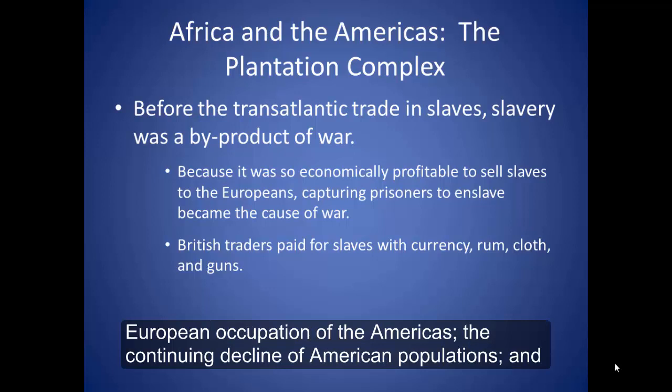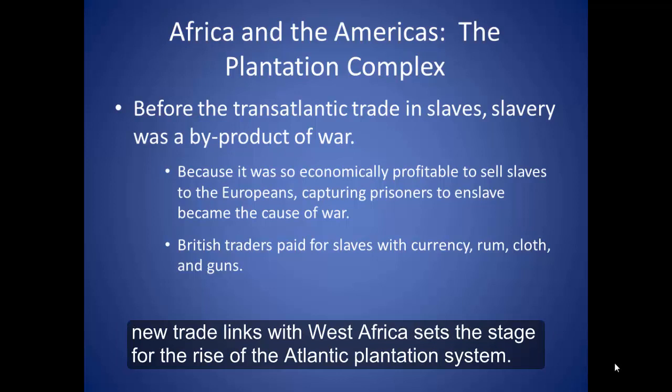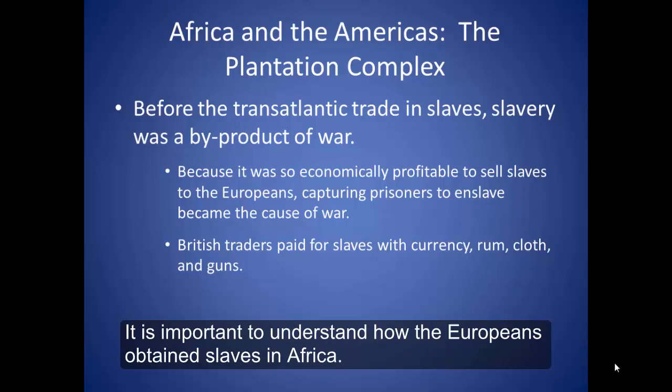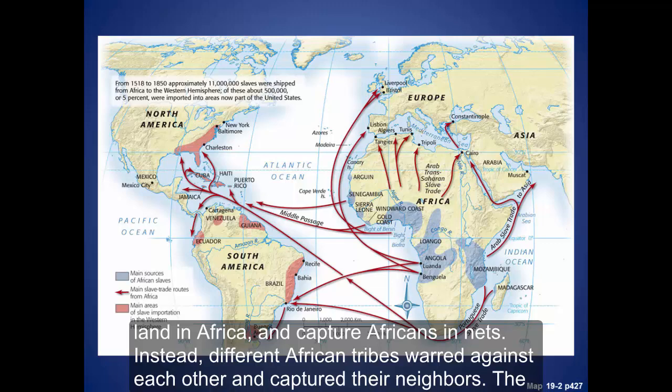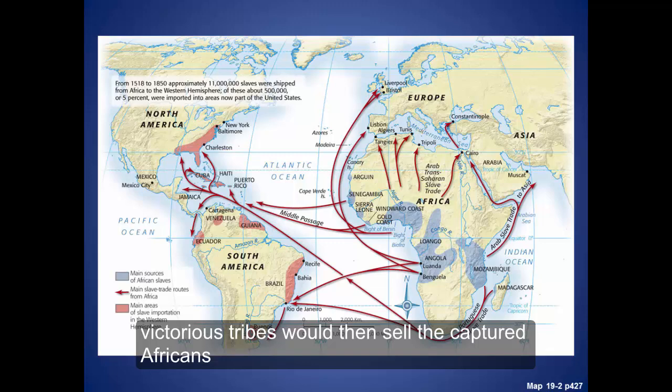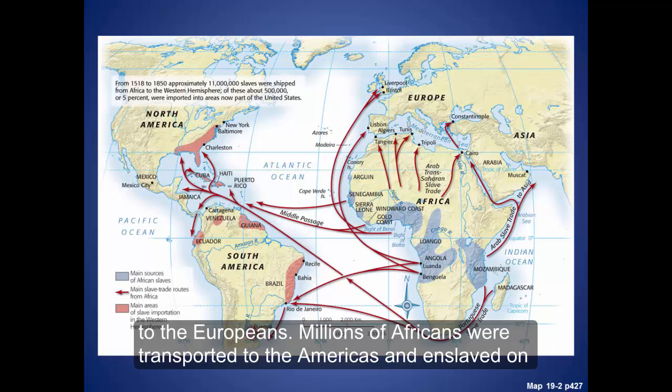European occupation of the Americas, the continuing decline of American populations, and new trade links with West Africa set the stage for the rise of the Atlantic plantation system. It is important to understand how the Europeans obtained slaves in Africa. The Europeans did not land in Africa and capture Africans in nets. Instead, different African tribes warred against each other and captured their neighbors. The victorious tribes would then sell the captured Africans to the Europeans.